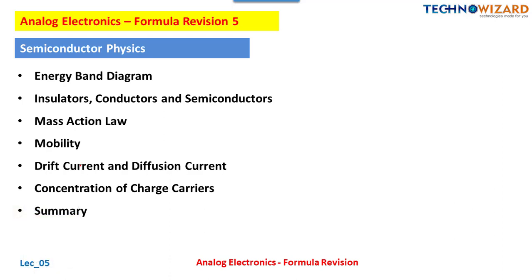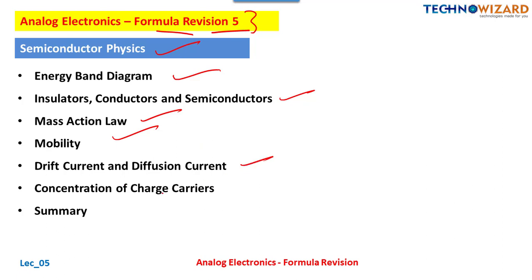Hello friends, welcome to Technobhazade. This is Rui Sharma and this is our formula revision number five. We are going to start a new series for the next subject, that is analog electronics. Formula revision number five is based upon the formulas for semiconductor physics. In this video we are covering energy band diagrams, insulators, conductors and semiconductors, mass action law, mobility, Einstein relation, drift current, diffusion current, concentration of charge carriers, and a summary at the end.